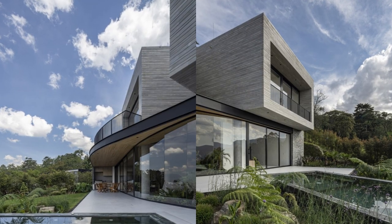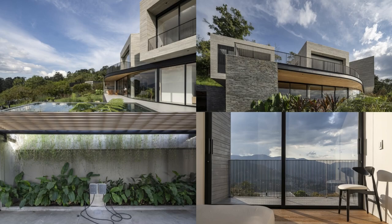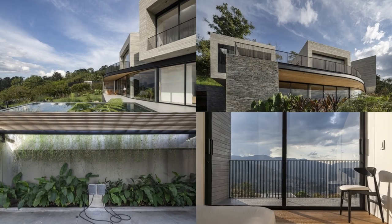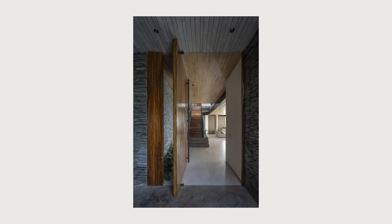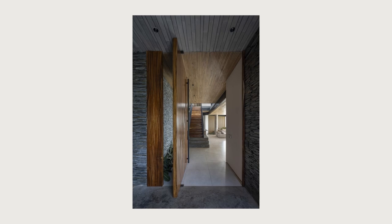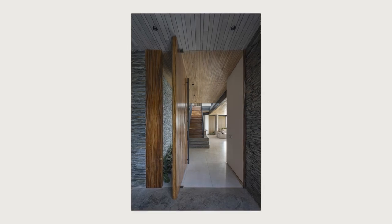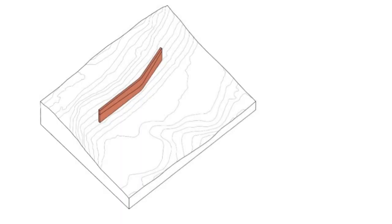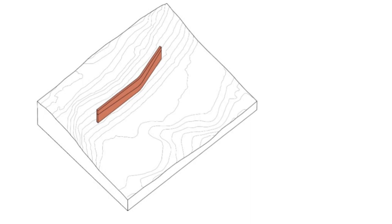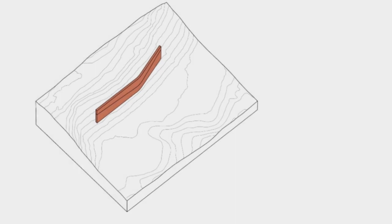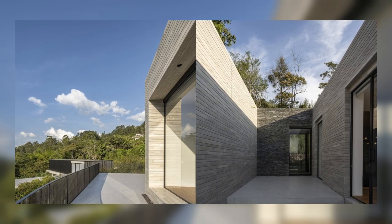The first steps lead to a plane that is shaped by the configuration of the land, where the parking lots, the social area, and the service area are located. The arrival plaza hints at the main access as the resulting void between the geometries of its volumes.